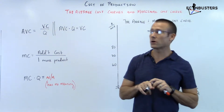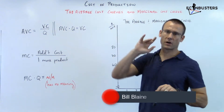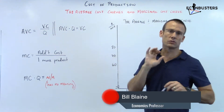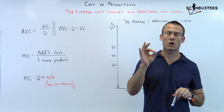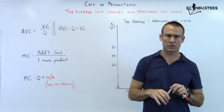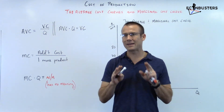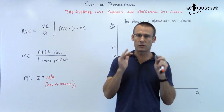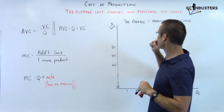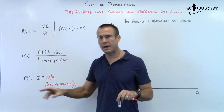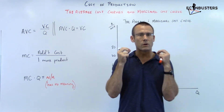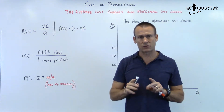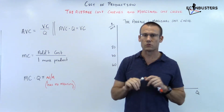Hey everybody, we are still on Theory of the Firm and we are in a unit called Cost of Production. Now we're going to take a look at the average cost curves and the marginal cost curve. Specifically, we're going to be looking at the average variable cost curve and the marginal cost curve. That's what this video is all about.